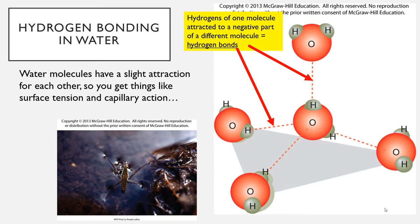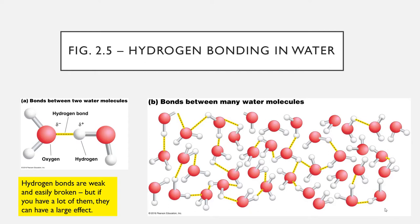When the hydrogens, which tend to be more positive, are attracted to a negative part of a different molecule, that's called a hydrogen bond. That's another kind of bond in chemistry. We talked about covalent bonds — those are the strongest kind. Hydrogen bonds are the weakest kind of bond. The covalent bond is within a molecule and holds it together; the hydrogen bond is usually between molecules. Here's a figure from your book showing hydrogen bonding between two or more water molecules. Hydrogen bonds are the weakest kind and are very easily broken.